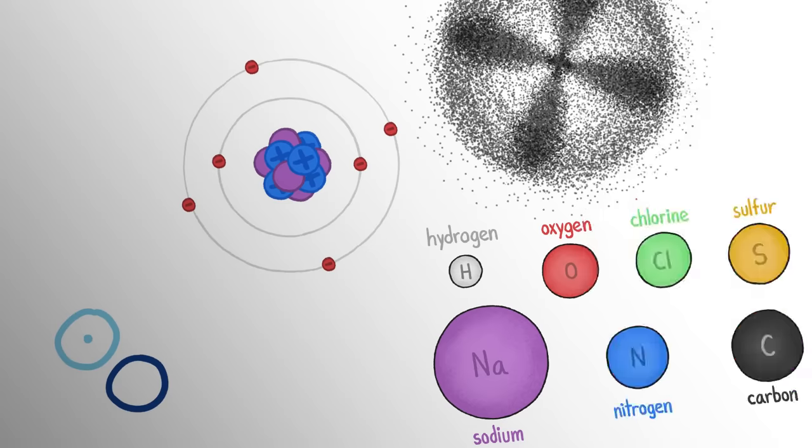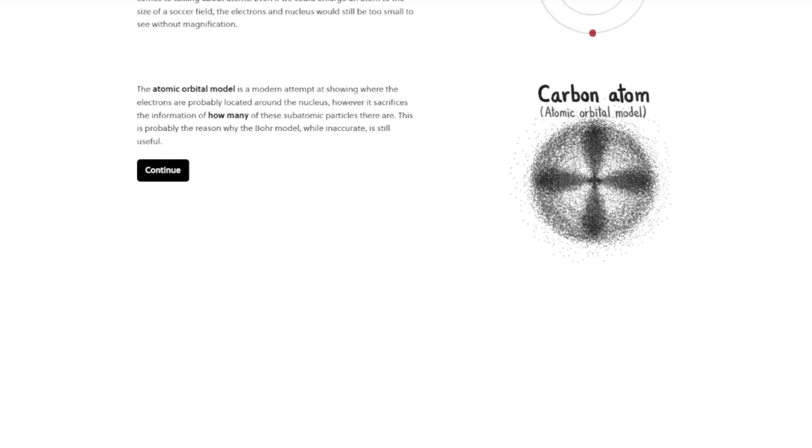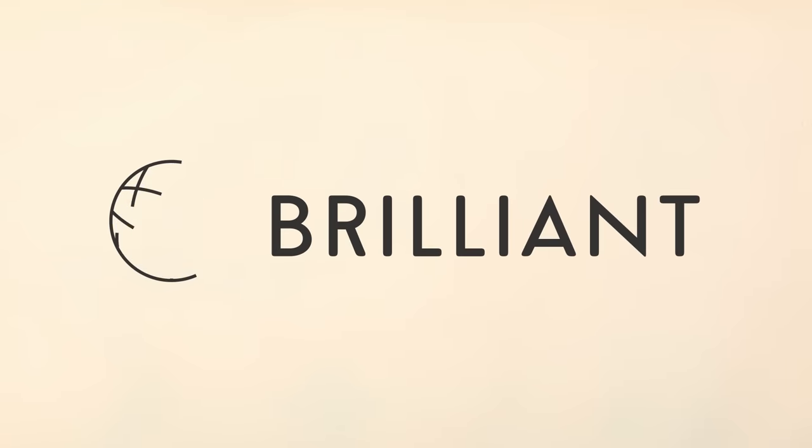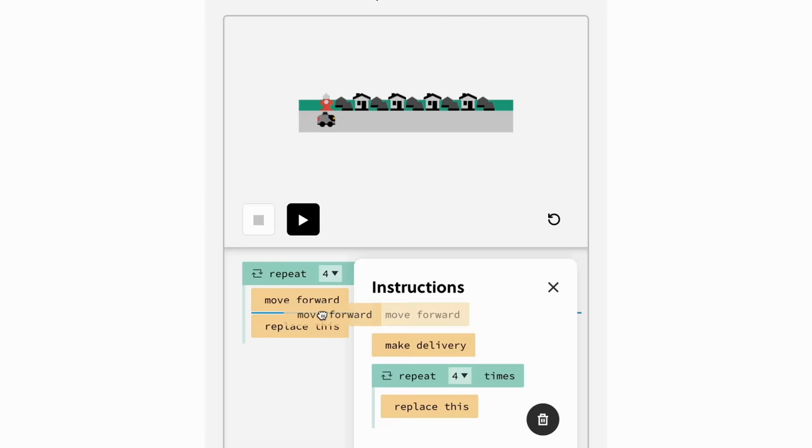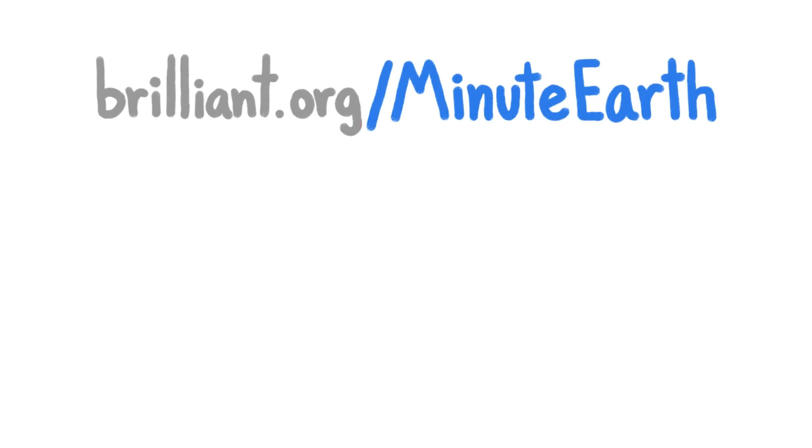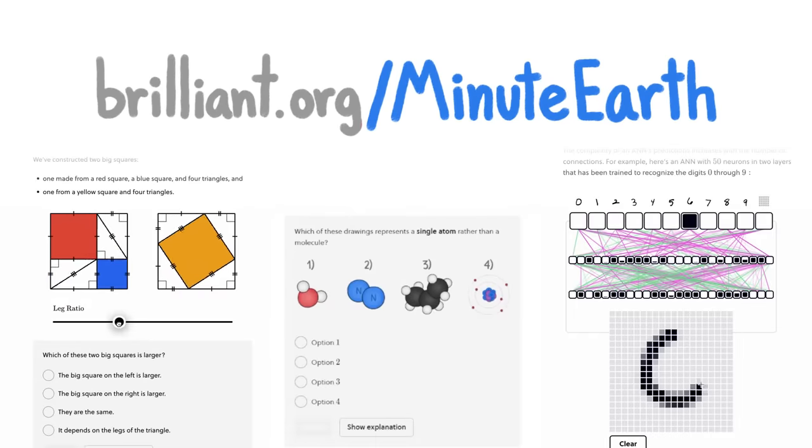We have lots of more precise and fancier symbols and models. You can actually learn everything about those new symbols and models and why they are so diverse in a wonderful course we made on Brilliant, the sponsor of this video and the must-go place for learning math, science, and computer science interactively. By going to brilliant.org slash MinuteEarth, you can enjoy this course and many, many others.